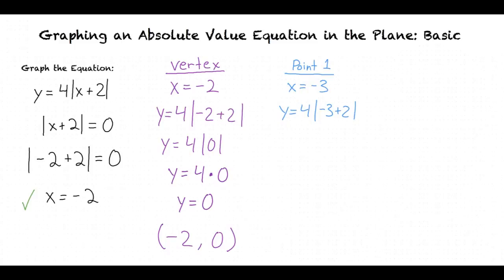Negative 3 plus 2 gives us negative 1, which makes our equation become y equals 4 times the absolute value of negative 1. And the absolute value of negative 1 is 1. 1 multiplied by 4 gives us y equals 4, making our point be negative 3 comma 4.